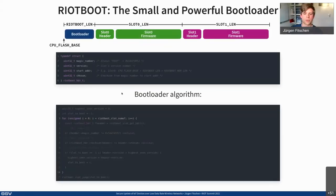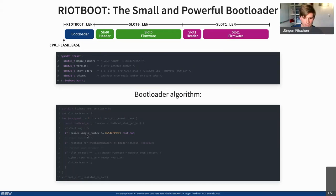The bootloader algorithm is easy to understand for C programmers. There's a for loop iterating over both slots. First it fetches the header of the slot being evaluated. Then it checks if the magic is present. If it's not, the if clause is true and continue is called, moving on to the next slot and no longer considering the current one.